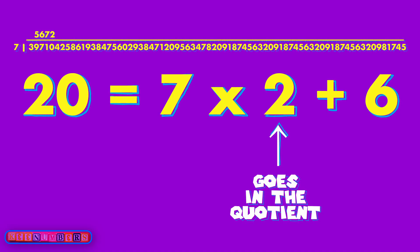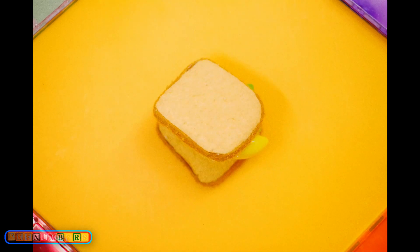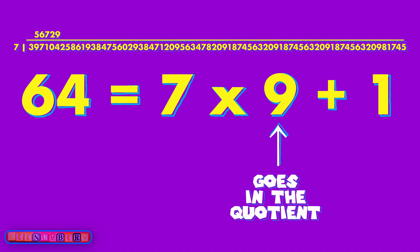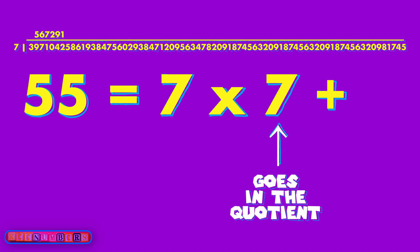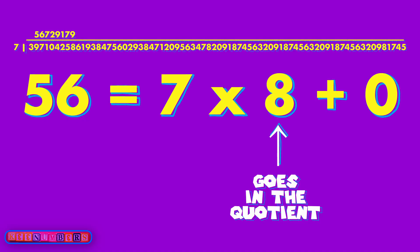Take a snack break if you need to. All right — you've got that nine; that's what went in the quotient. Now you've got 12, which is something that seven goes into one time, so the one goes in the quotient. You have five left over and you pull down a five, so that means you're gonna have 49 plus six — seven goes upstairs. You're gonna have 56, which is just seven times eight; nothing's left over, so the eight goes upstairs.